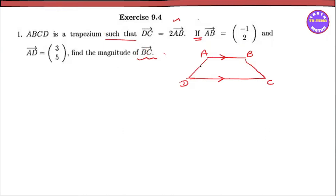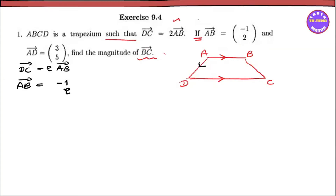The AD vector — when we take the order — the DC vector is derived. Let's get a picture of the DC vector. DC vector is equal to D. The AB vector is given as a column vector. So this is called the BC vector.